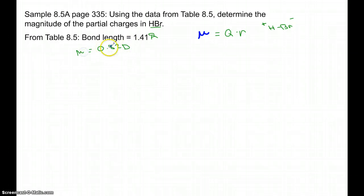So these are not the units that we want here. We're solving for Q. If I rearrange this, I can have Q is equal to μ, or my dipole moment, divided by R, my bond length. First off, we need to change these into the units we want them to be in. Angstroms is a unit of length. We want to change that into meters, the SI standard unit. An angstrom is 1 times 10^-10 meters.